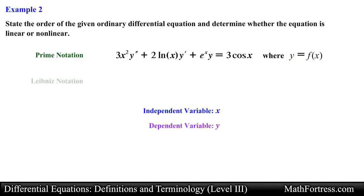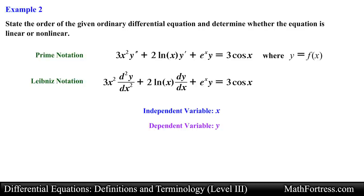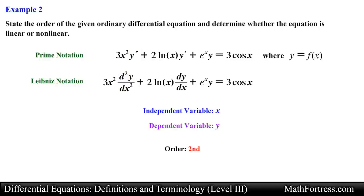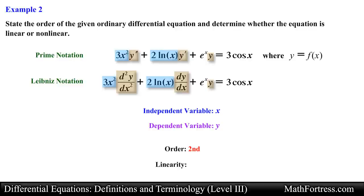We can rewrite this ODE using Leibniz notation. This ODE has two derivatives — a second derivative and a first derivative — and the highest is the second derivative, so this is a second order ODE. Inspecting the second and first derivative, both are raised to the power of 1, and the dependent variable y is also raised to the power of 1. Checking the products, we have 3x squared, 2 times the natural log of x, and e to the x — all written in terms of x.